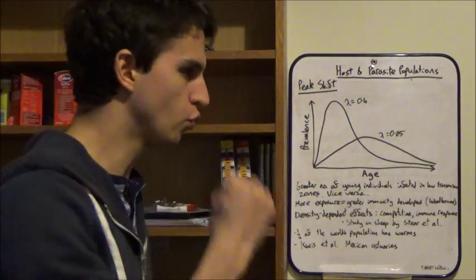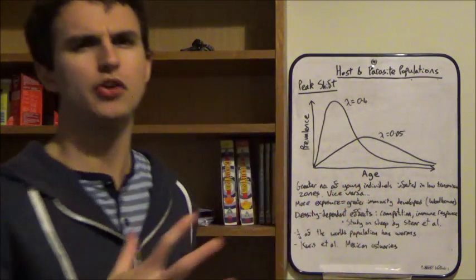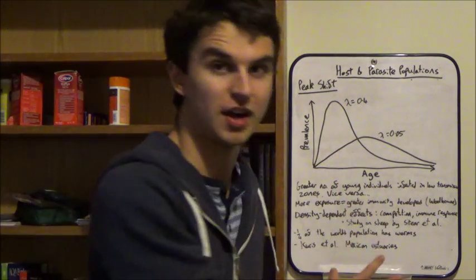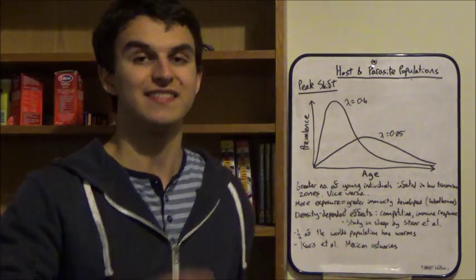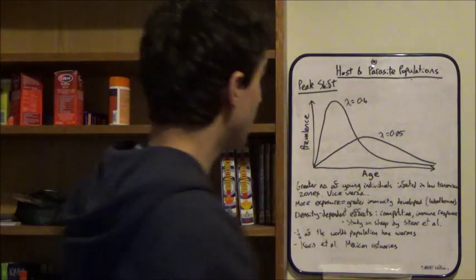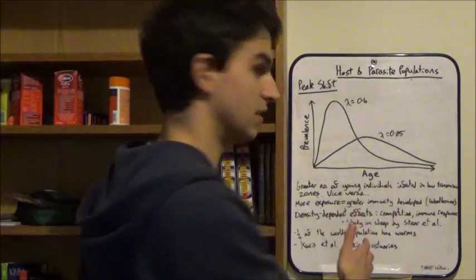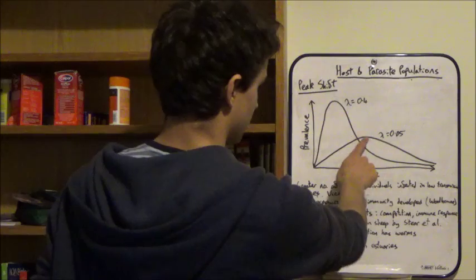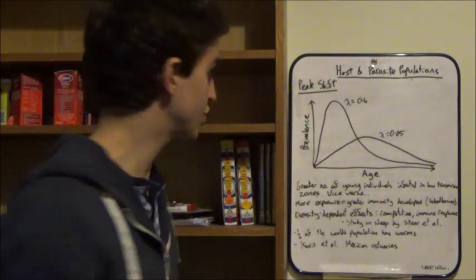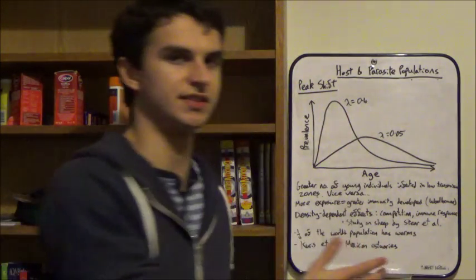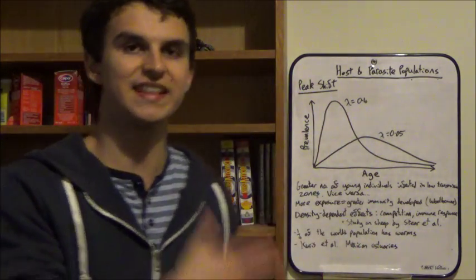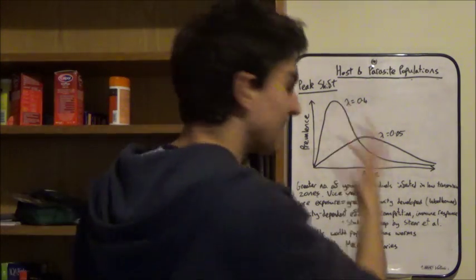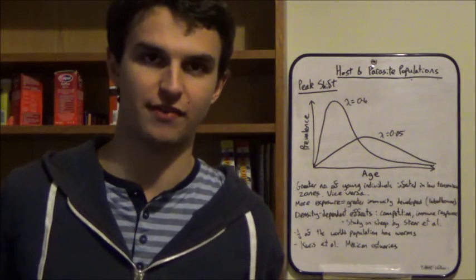A researcher called Woolhouse did a whole load of mathematical modelling experiments trying to describe this. He found a negative correlation between peak prevalence and the age of peak prevalence — and that's basically what we're seeing in this graph.